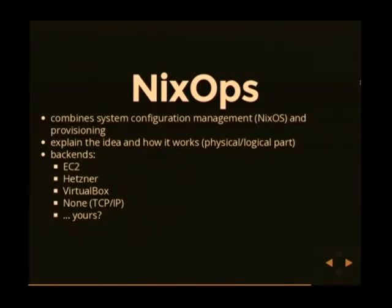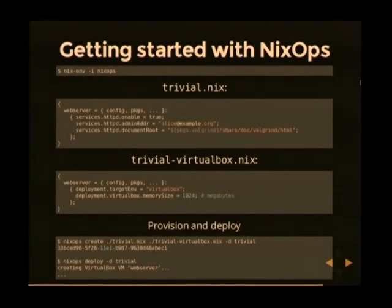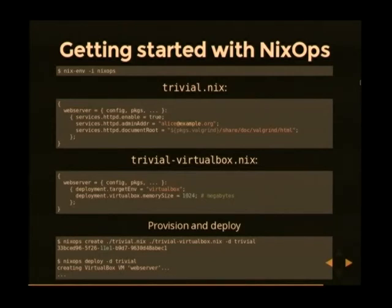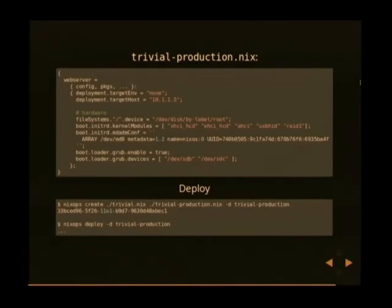As a last step, there's NixOps — deploying NixOS to the cloud and provisioning. We currently have several backends implemented, and more could be added. You install it with Nix, then define a machine as a function of config and packages. For example, here we configure Apache. NixOps has a separation of physical and logical parts — the physical part specifies, for example, that this time we deploy to VirtualBox. You just say 'target environment is VirtualBox,' pass those two files, name the deployment 'trivial,' and deploy. This will actually create a VirtualBox machine, configure everything, and fire it up.